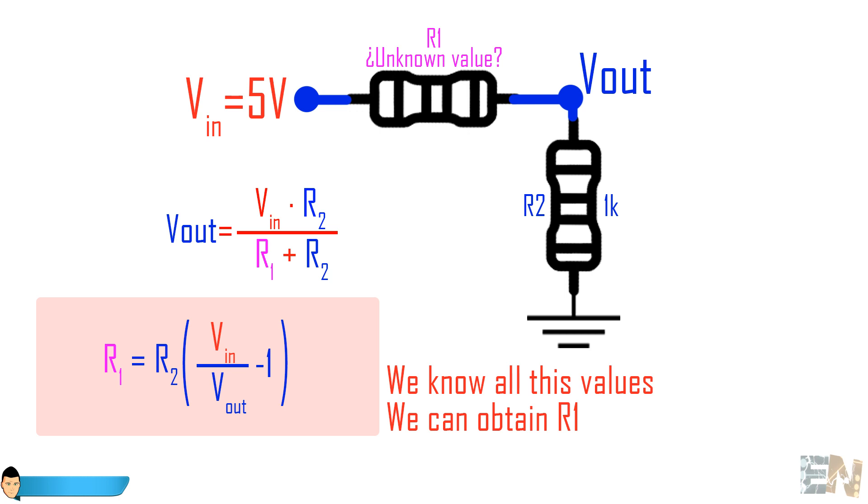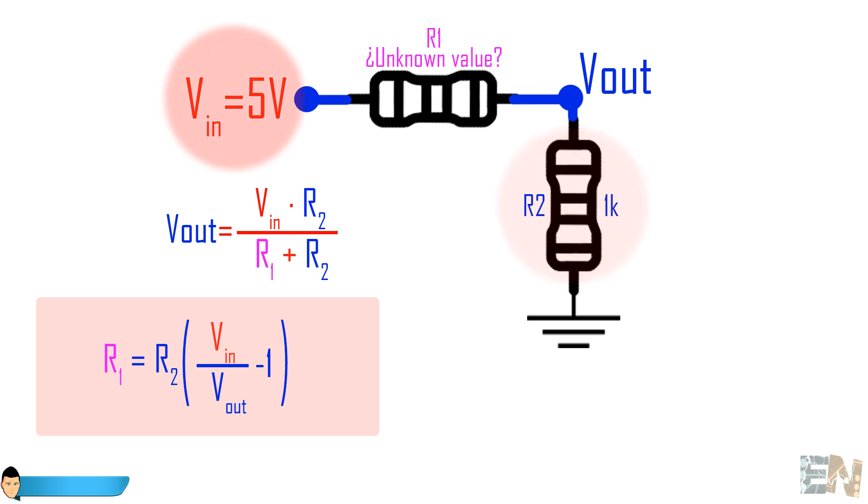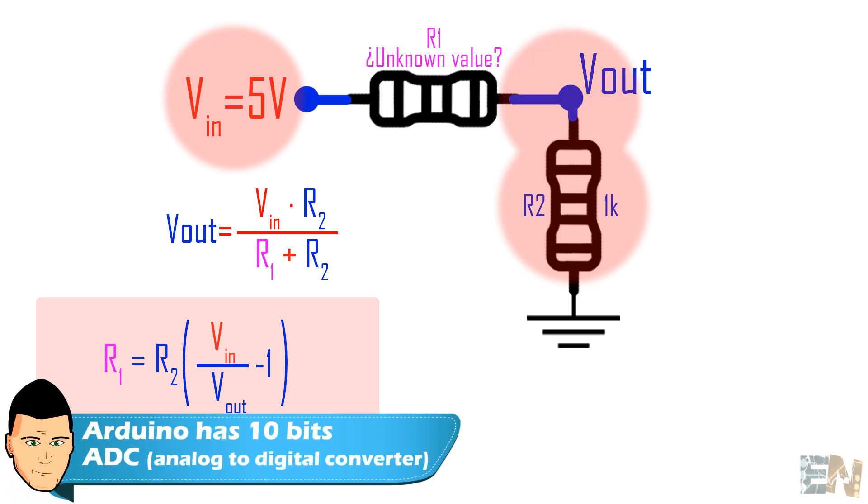We know all these values, so we can easily obtain R1. The input voltage will be 5 volts from the Arduino, and R2 will have a predefined value. All we need to do is measure the output voltage with one of the Arduino ADC. With all this data, we could obtain the unknown value.